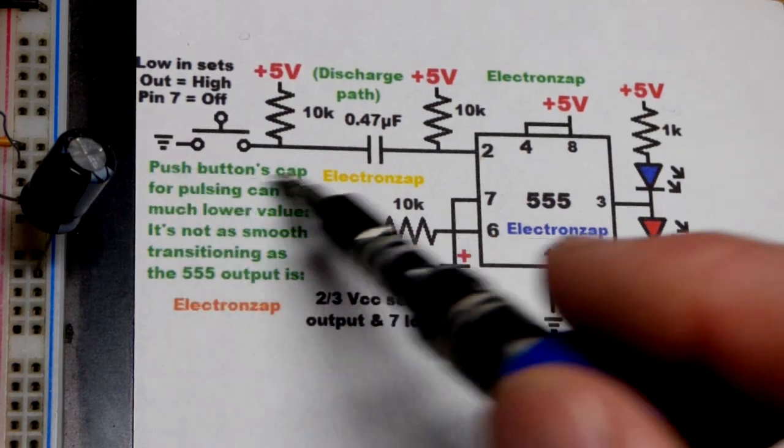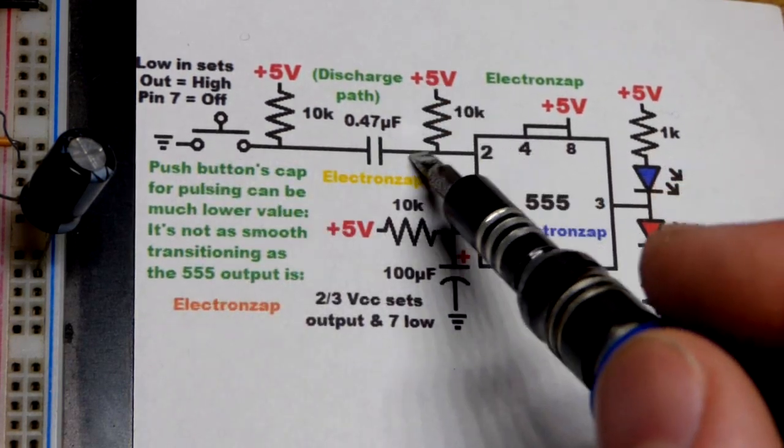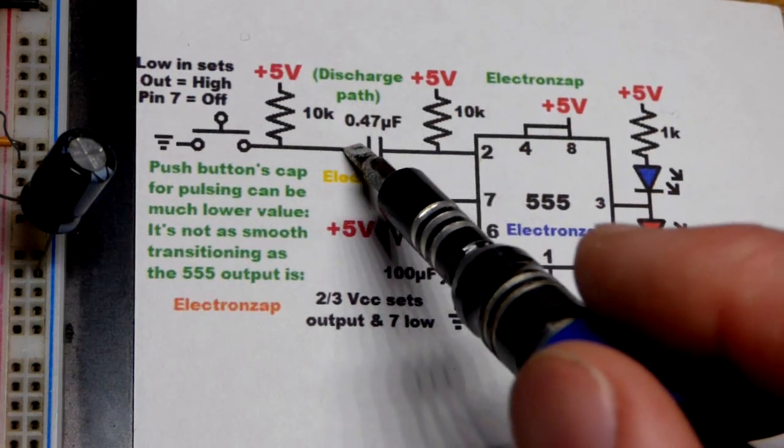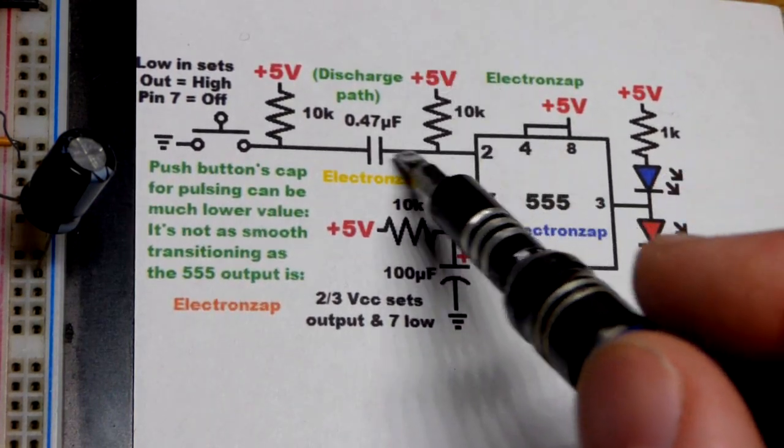And thus pin 2 is going to see probably 0 volts real quickly, less than one third of the supply voltage. But then the capacitor is going to charge. This is going to charge up to 5 volts on that side, 0 volts on that side.